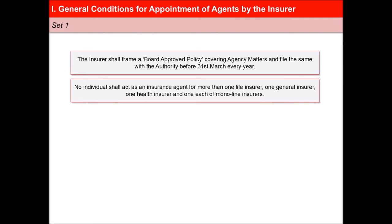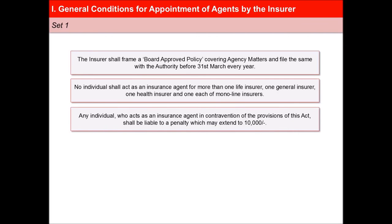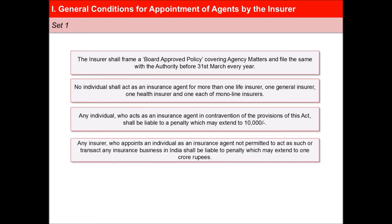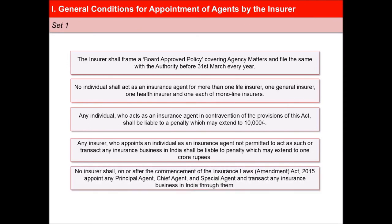Any individual who acts as an insurance agent in contravention of the provisions of this Act shall be liable to a penalty which may extend to Rs. 10,000. Any insurer who appoints an individual as an insurance agent not permitted to act as such or transact any insurance business in India shall be liable to a penalty which may extend to Rs. 1 crore.